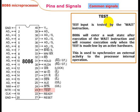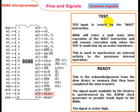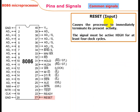TEST is used to synchronize an external activity to the processor's internal operation. READY is the acknowledgement from a slow device or memory that they have completed the data transfer. The signal is synchronized by the 8284 clock generator to provide a ready input to the 8086; the signal is active high.